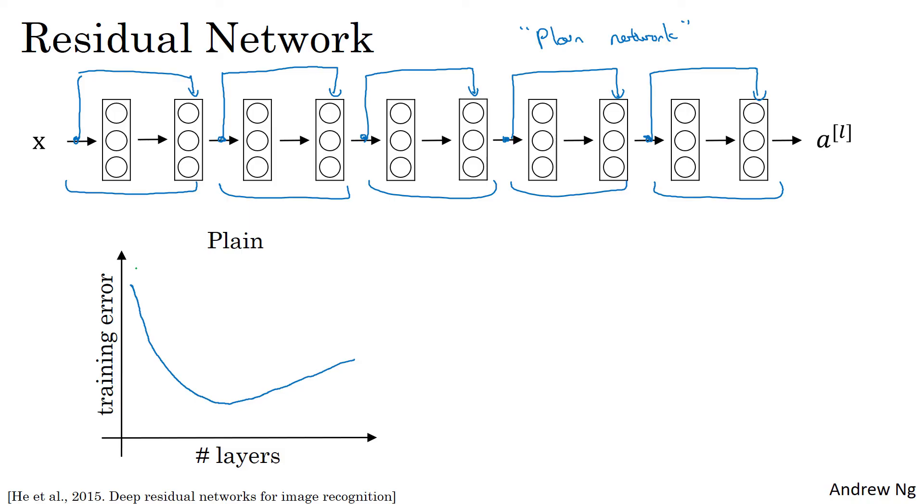And in theory, as you make a neural network deeper, it should only do better and better on the training set. So the theory, in theory, having a deeper network should only help. But in practice or in reality, having a plain network, so not a ResNet, but having a plain network that's very deep means that your optimization algorithm just has a much harder time training. And so in reality, your training error gets worse if you pick a network that's too deep.